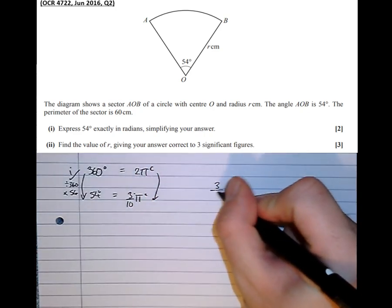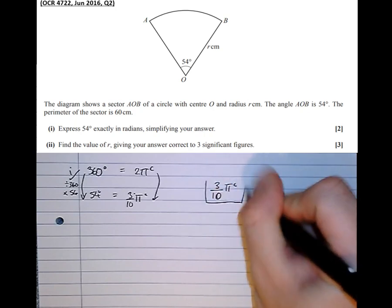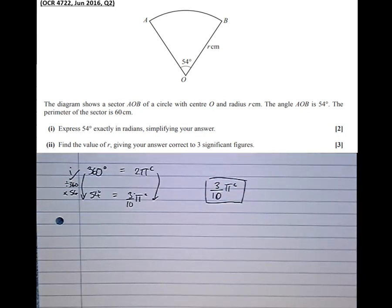So the answer, let's make it prominent, 3 tenths π radians. Now if you do convert it to a decimal, you end up actually losing marks here. It asks for the exact answer, so the very act of converting to a decimal shows lack of understanding of what the question wanted and would lose you a mark.